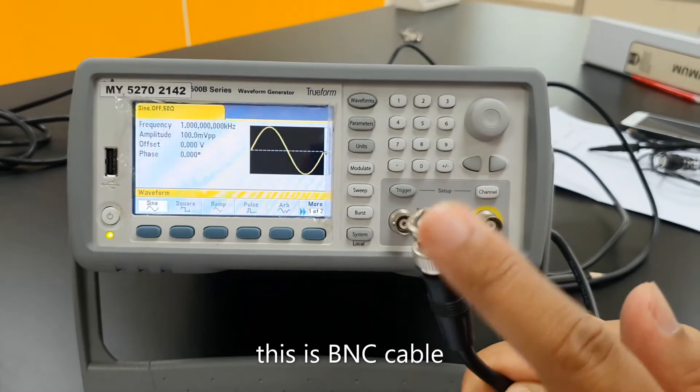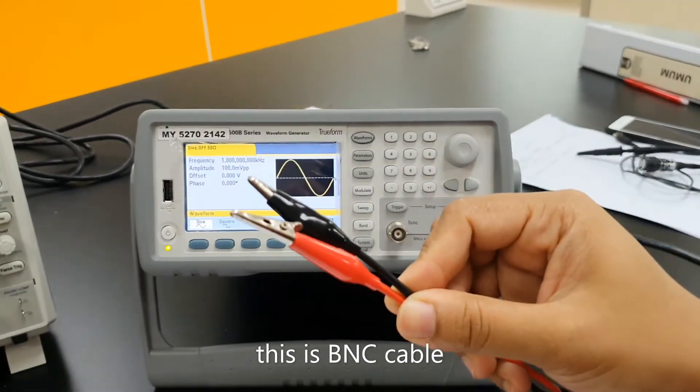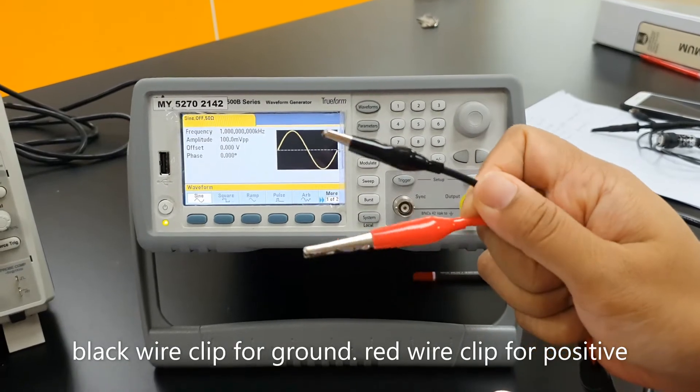This is a BNC cable. Black wire clip for ground, red wire clip for positive.